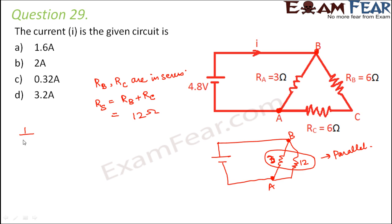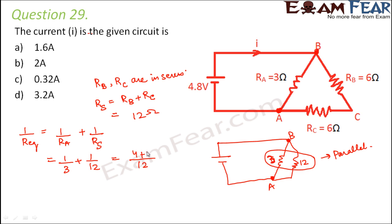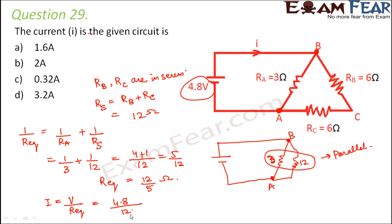Therefore the equivalent resistance of the circuit: 1 by R equivalent is equal to 1 by R_A plus 1 by R_series. This is equal to 1 by 3 plus 1 by 12, which is equal to 4 plus 1 over 12, so 5 by 12. Therefore R equivalent is equal to 12 by 5 ohms. For the entire circuit, current equals net potential divided by net resistance, which is 4.8 volts divided by 12 by 5, giving 4.8 into 5 divided by 12, which equals 2 amperes.